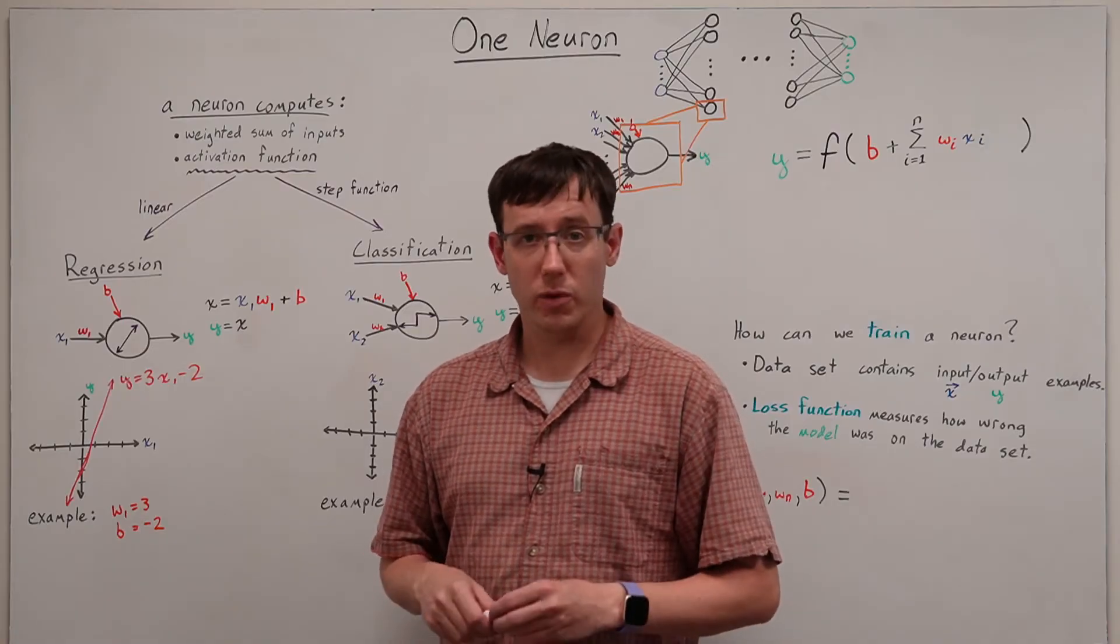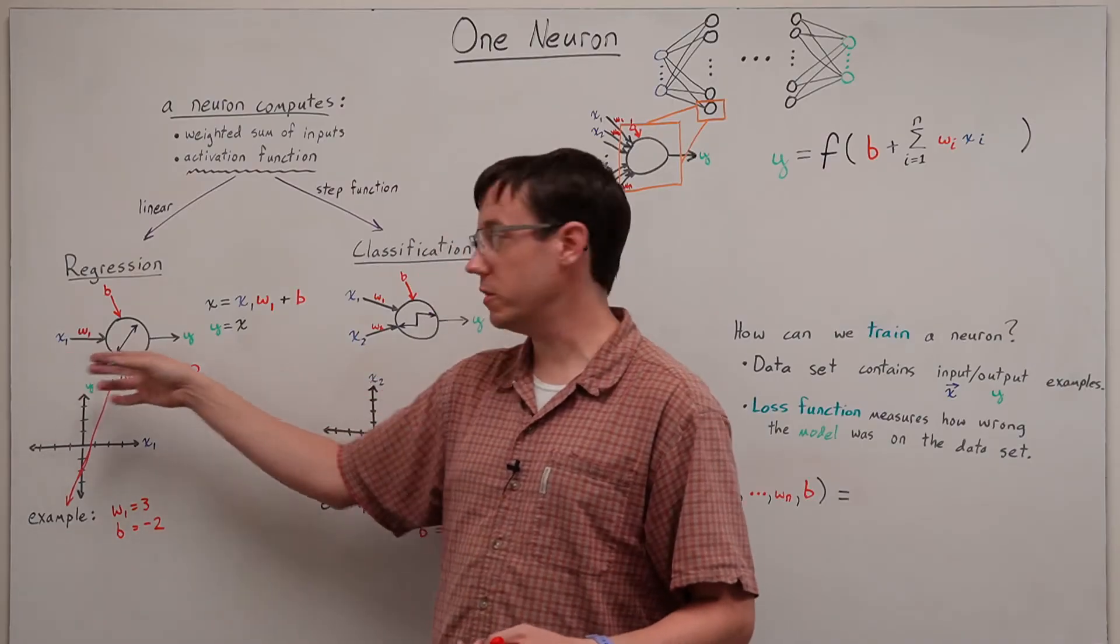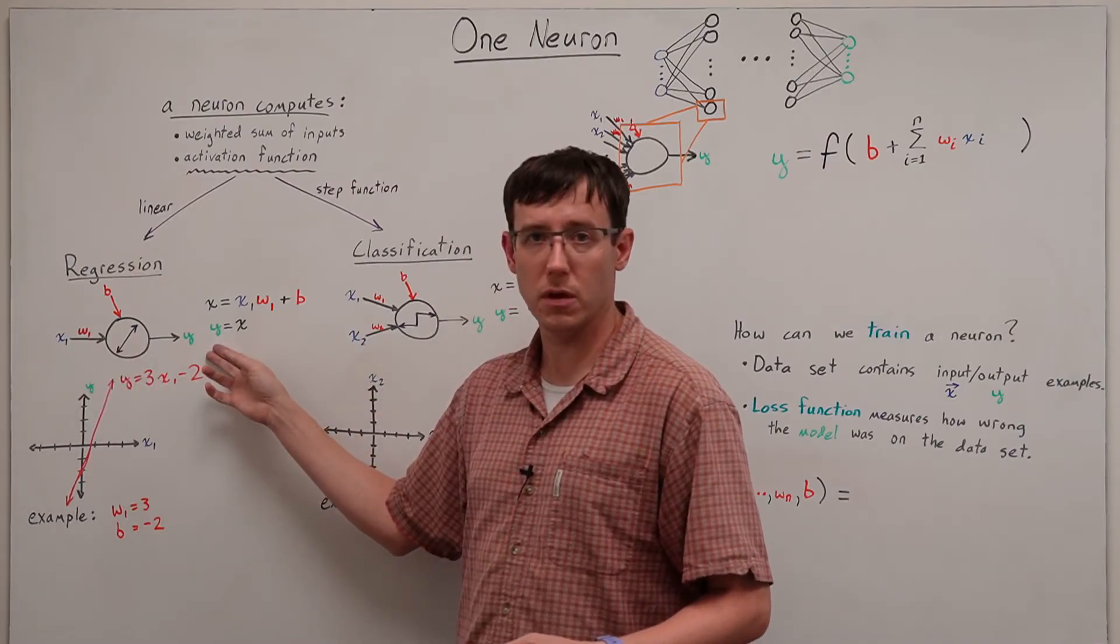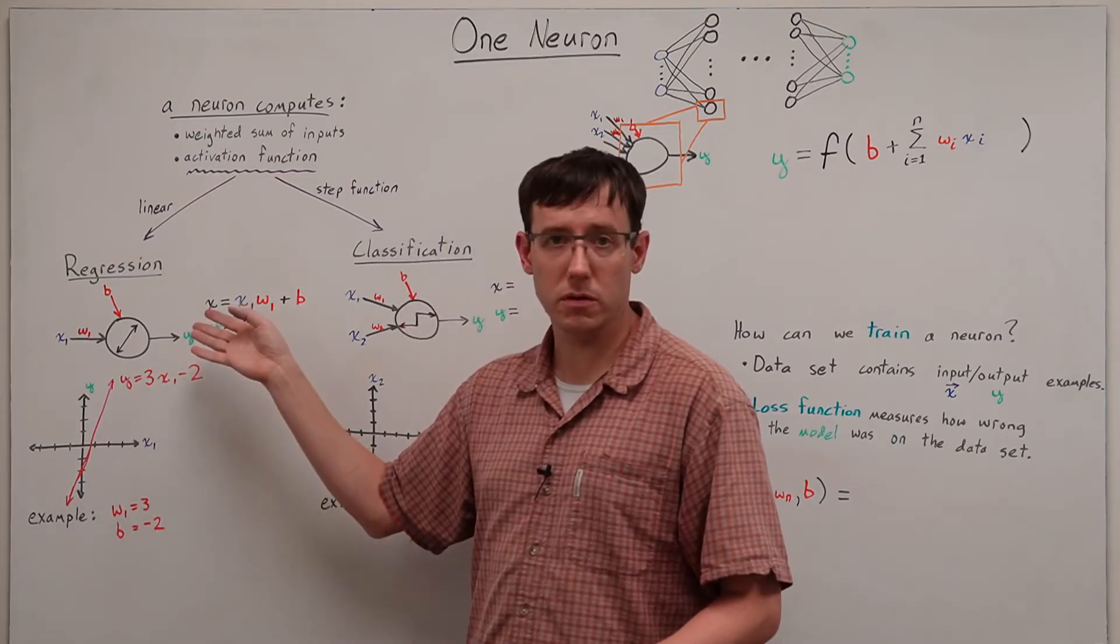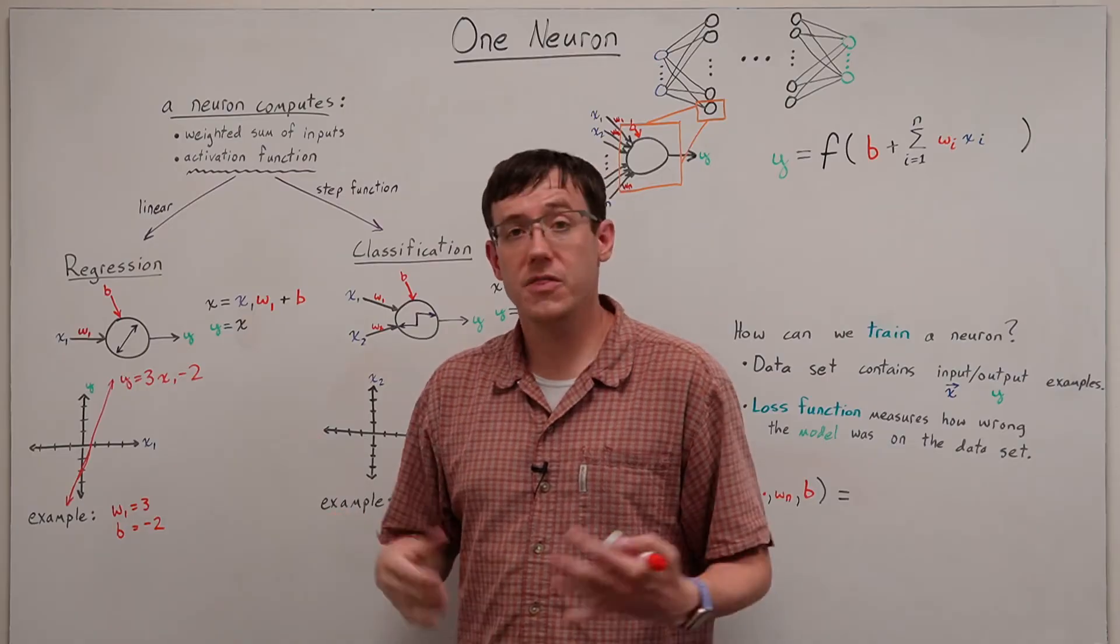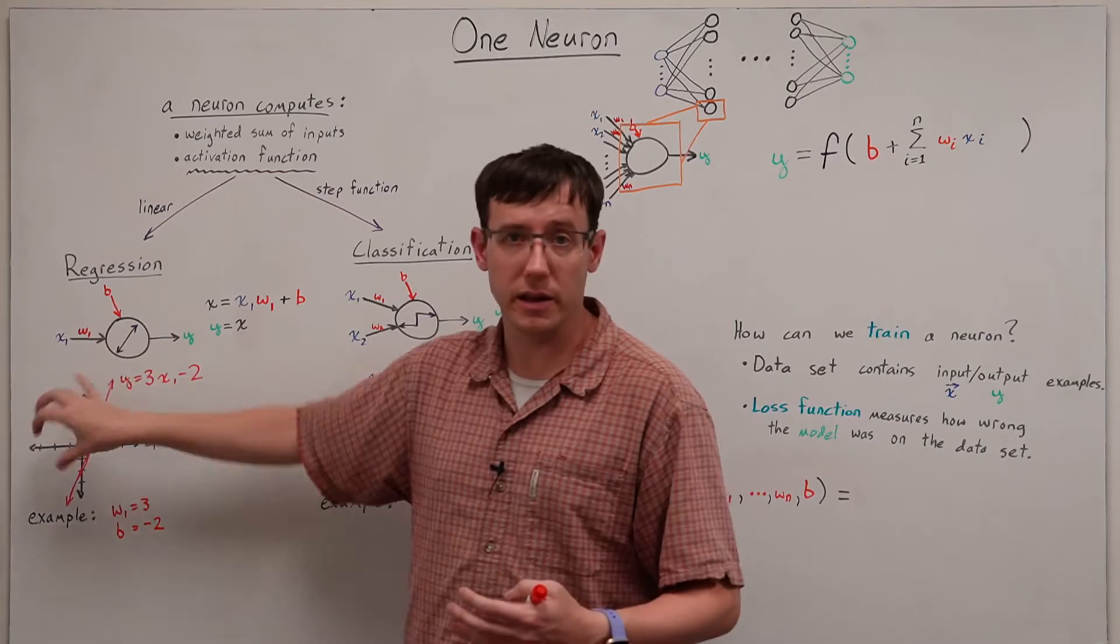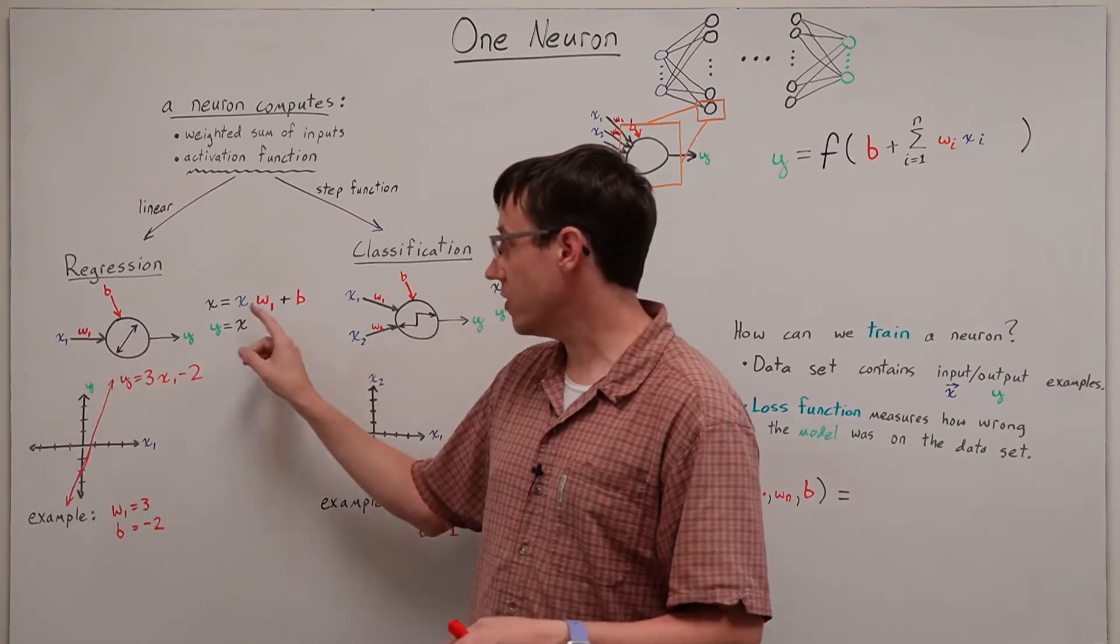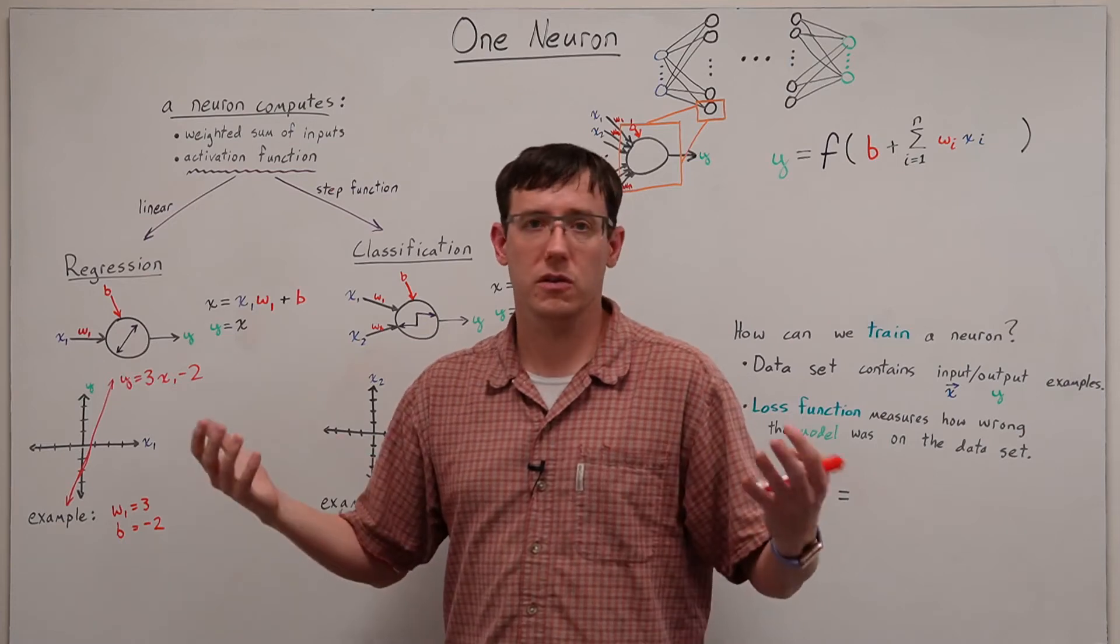Well, in regression, we are looking for some mapping from continuous inputs to continuous outputs, and since our neuron produces continuous outputs, this is a type of function we could use for regression, and then the regression problem would be to choose the specific linear function, that is the specific values for w1 and b, that best fits some data set.